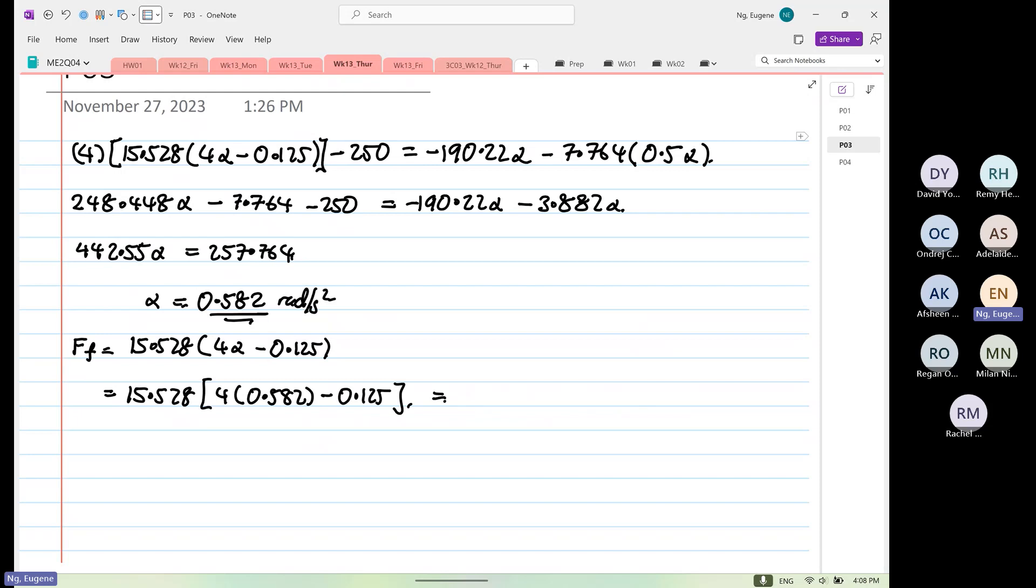So 15.4 times 0.582 minus 0.125 times 15.528 is equal to 34.208. How far? Okay.